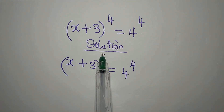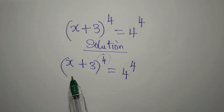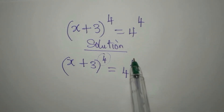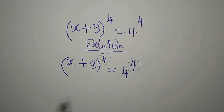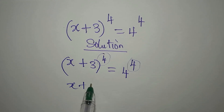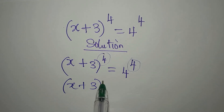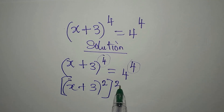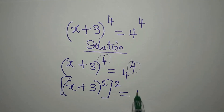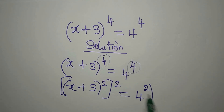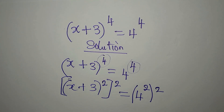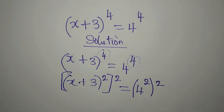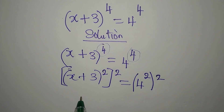The next thing I want to do is to cut this power into 2 and then do the same thing to this power. So we have (x + 3) to the power of 2, to the power of 2, and that will be equal to 4 to the power of 2, to the power of 2. I am doing this because I want to apply difference of two squares.